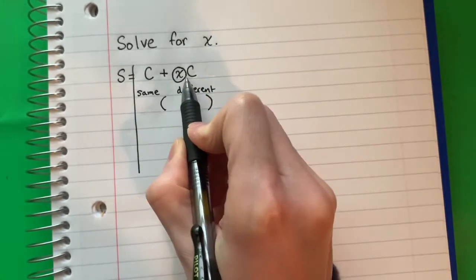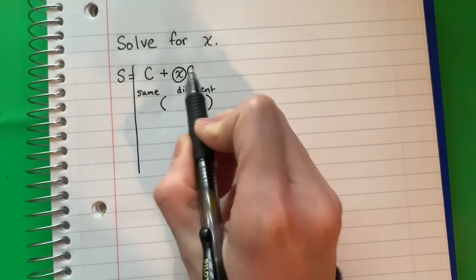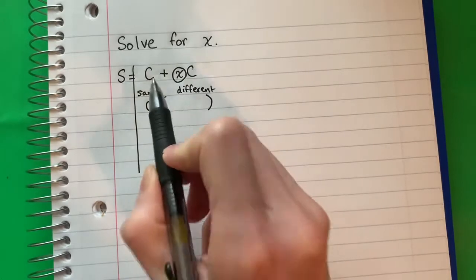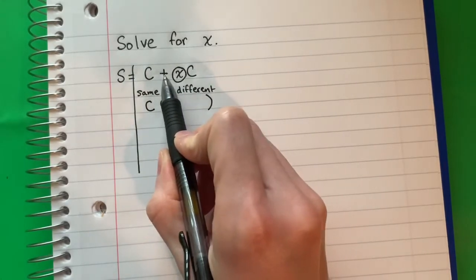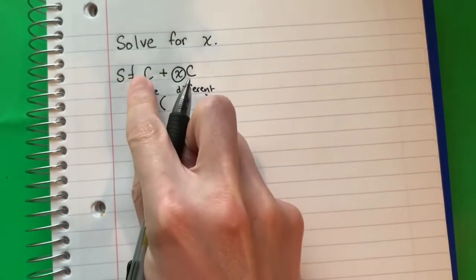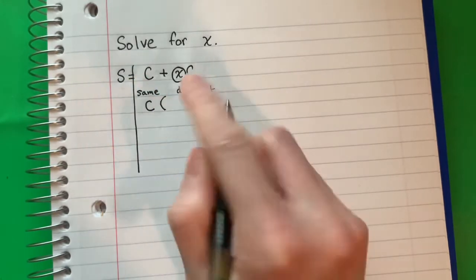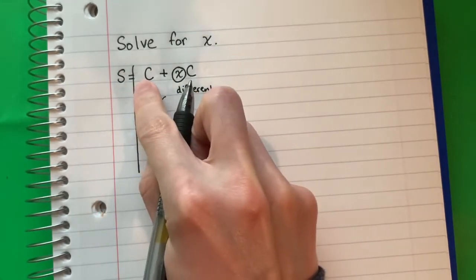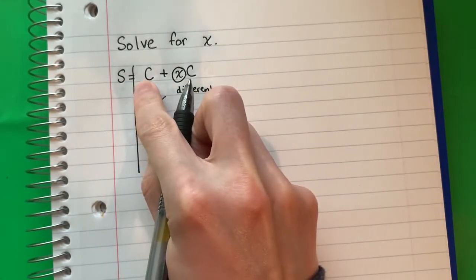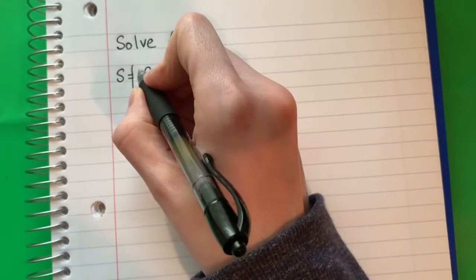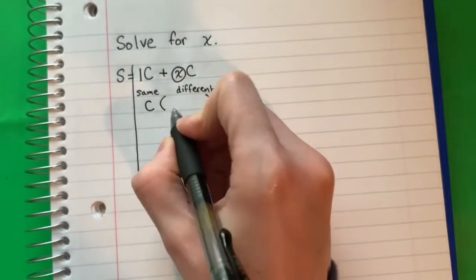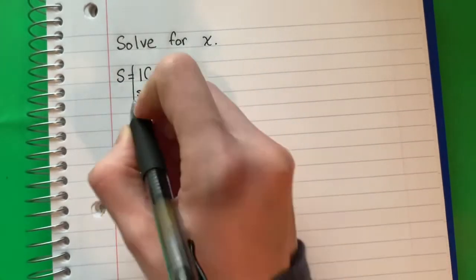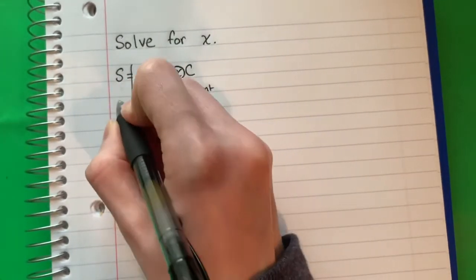So I have two terms here. What is the same? C and c. So those are the same. I'm going to put it outside. What is different? Plus x. So I need something here. I cannot leave something empty and just put plus x. So what number is in front of c if there's no number? Well, it's a variable of one. So I'm going to put one plus x are different. And I'm going to copy equals s.